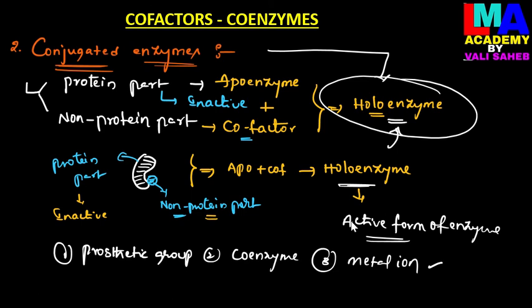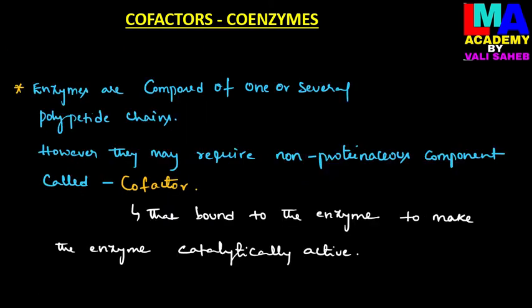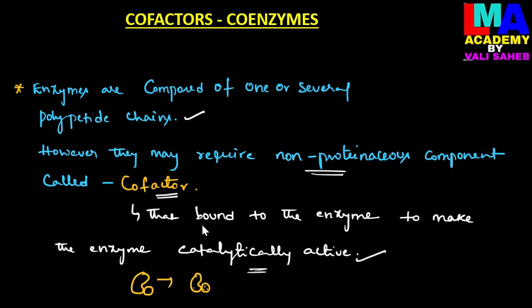The definition of a cofactor: enzymes are composed of one or more polypeptide chains, however they may require a non-proteinaceous part, that is the cofactor. The cofactor is the non-protein part of the conjugated enzyme. The cofactor binds to the enzyme to make it catalytically active. Without the cofactor, the enzyme is catalytically inactive.